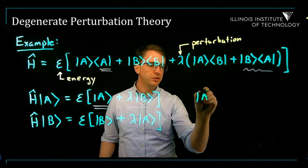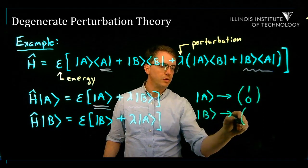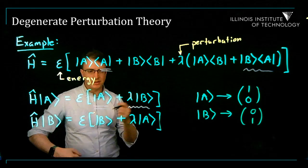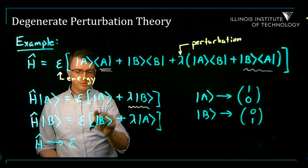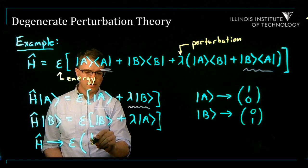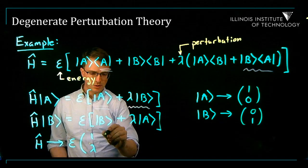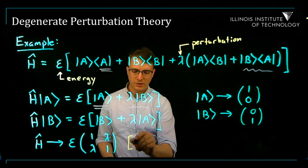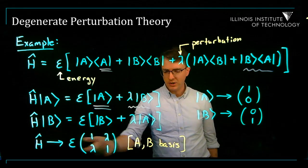Now we need to choose a basis. Let's choose the basis A and B, where A is represented by (1,0) and B by (0,1). We can see what the matrix H looks like: H-hat on A gives the first column, which is epsilon A plus lambda B, so (epsilon, lambda). And H-hat on B gives lambda A plus epsilon B, so the second column is (lambda, epsilon). This is the matrix representation of H in the AB basis. If lambda equals 0, the eigenvalues are epsilon and epsilon — one eigenvalue for two different states.